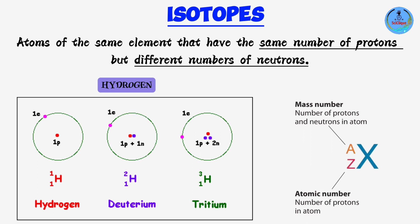The third type of hydrogen atom, tritium, has one proton and two neutrons. These three atoms all have the same number of protons — one — so they have the same atomic number, which simply refers to the number of protons. However, they differ in their neutrons, so their mass numbers are different. The mass number is the sum of the number of protons and neutrons in an atom.